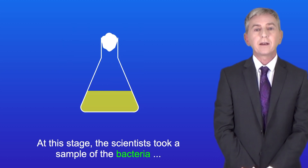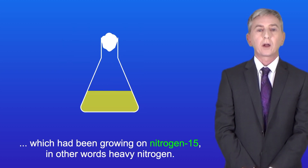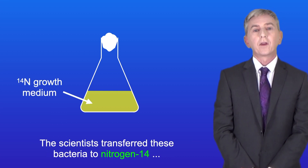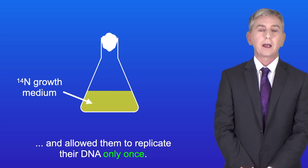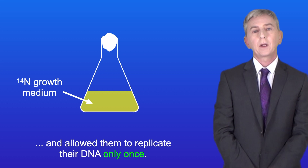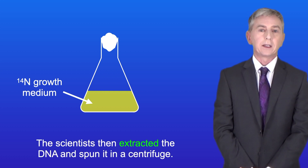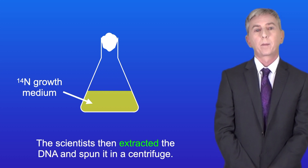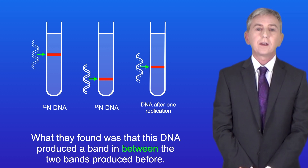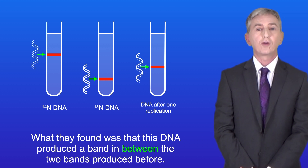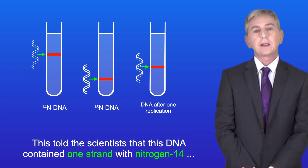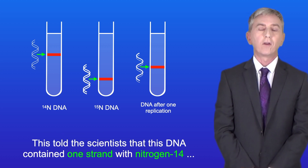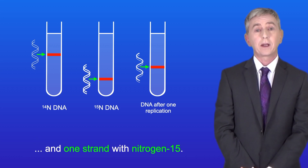At this stage the scientists took a sample of the bacteria which had been growing on nitrogen-15 — heavy nitrogen. They transferred these bacteria to nitrogen-14 and allowed them to replicate their DNA only once. The scientists then extracted the DNA and spun it in a centrifuge. What they found was that this DNA produced a band in between the two bands produced before. This told the scientists that the DNA contained one strand with nitrogen-14 and one strand with nitrogen-15.